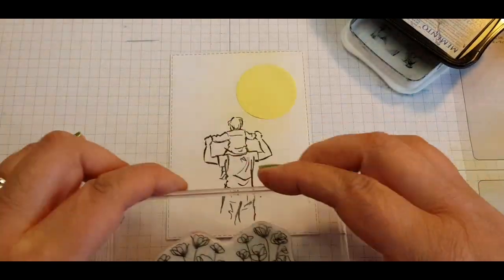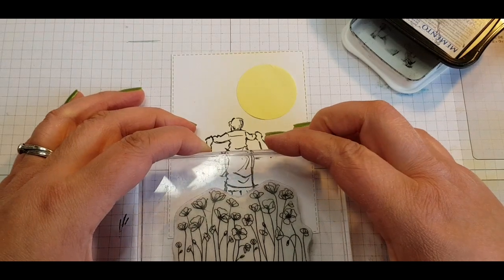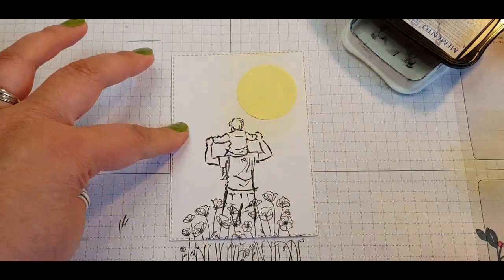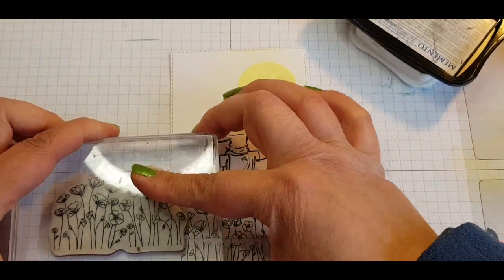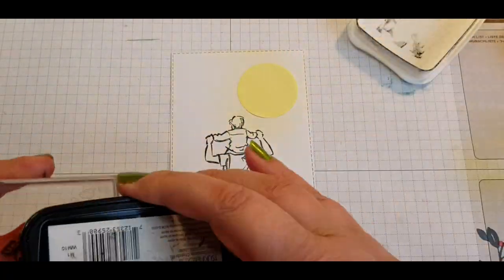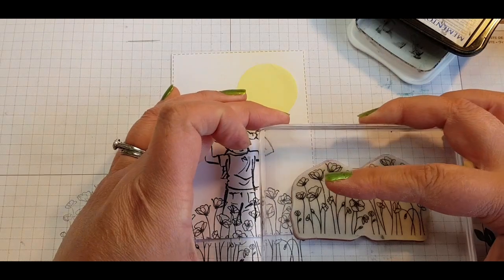Then I'm inking up the group of poppies and I'm having them walking through the poppies so stamping the poppies so that you can just see the top of their legs and then stamping each side to complete the picture.